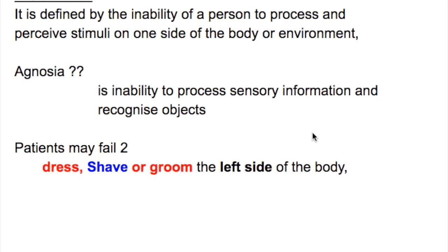In this video, we will discuss Unilateral Neglect Disorder or Hemiagnosia. What is Hemiagnosia, or Hemineglect, or Unilateral Neglect Disorder? It is defined as an inability of a person to process and perceive stimuli on one side of the body or environment.